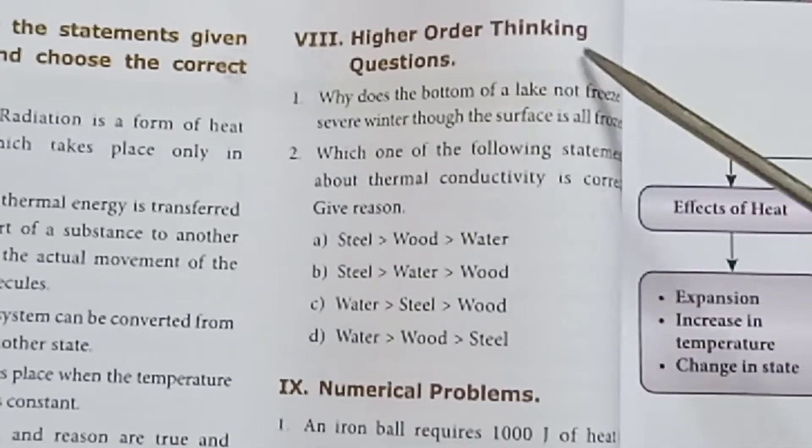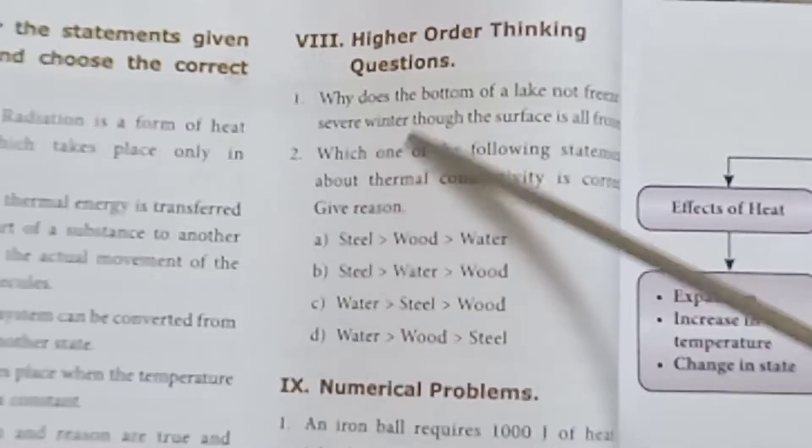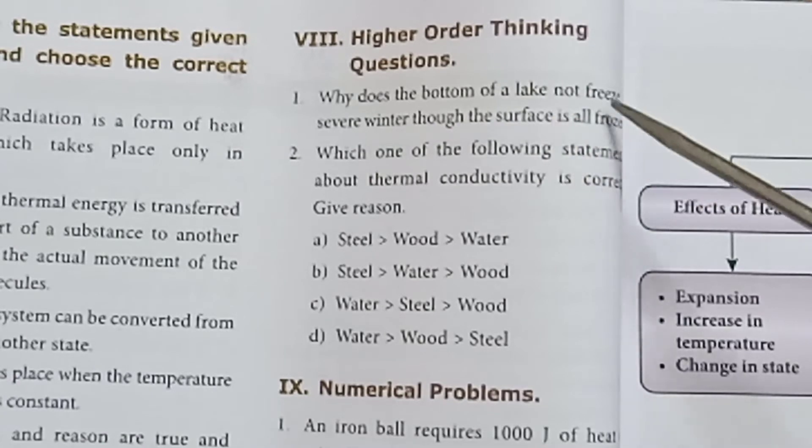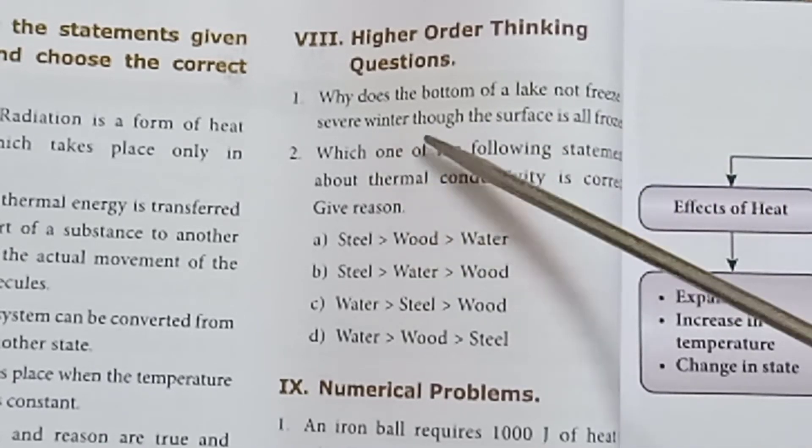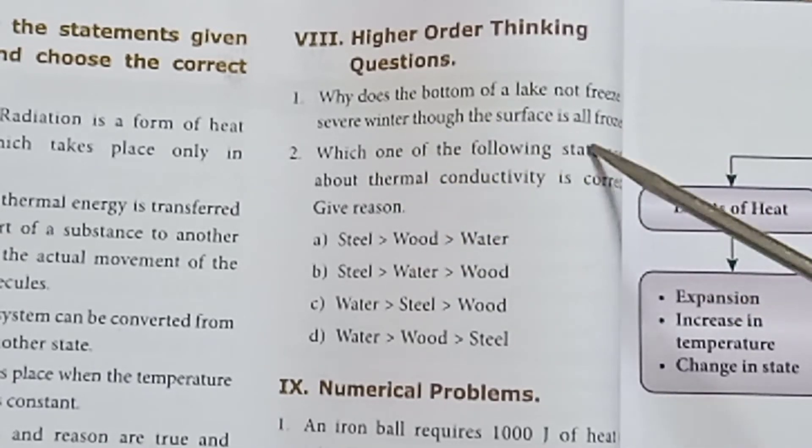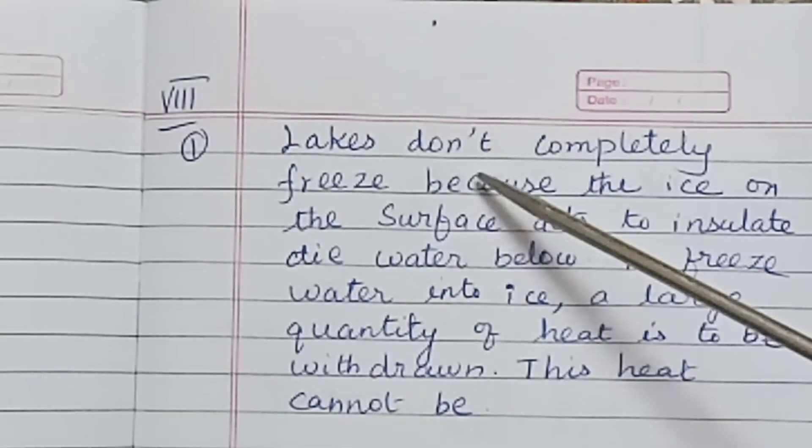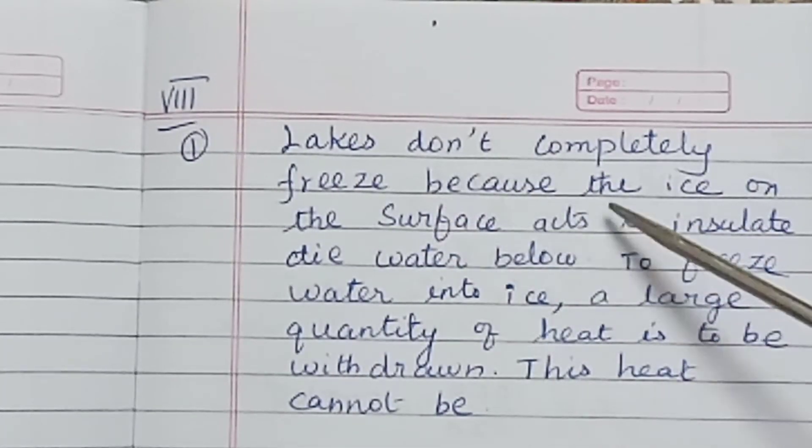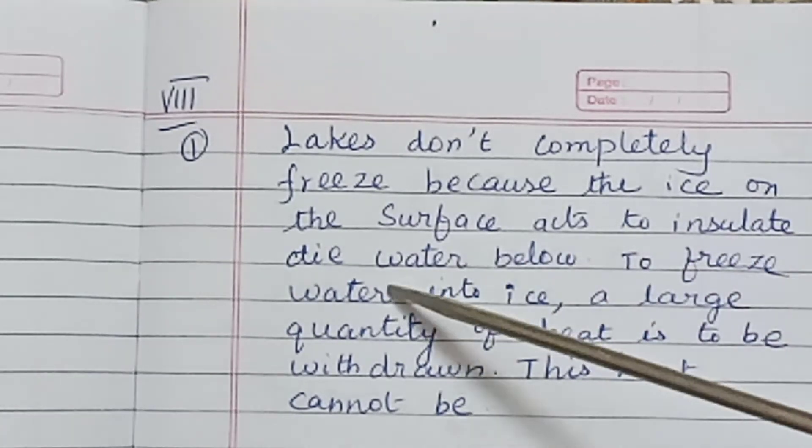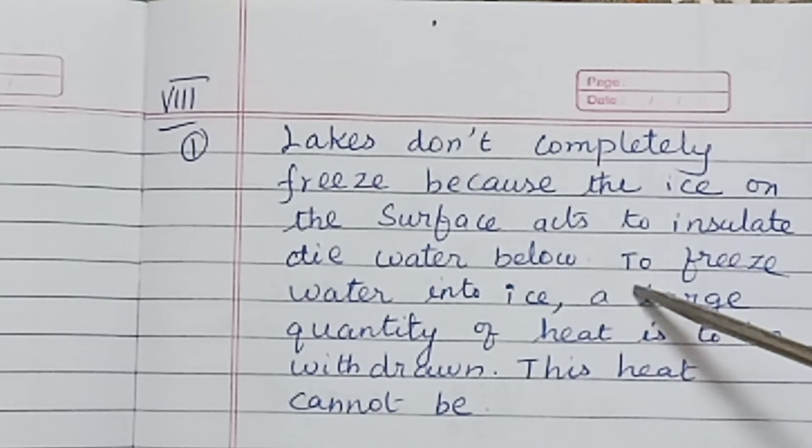Number 8: Higher order thinking questions. First question: Why does the bottom of a lake not freeze in severe winter though the surface is frozen? Lakes do not completely freeze because the ice on the surface acts to insulate the water below. To freeze water into ice, a large quantity of heat is to be withdrawn. This heat cannot be withdrawn.